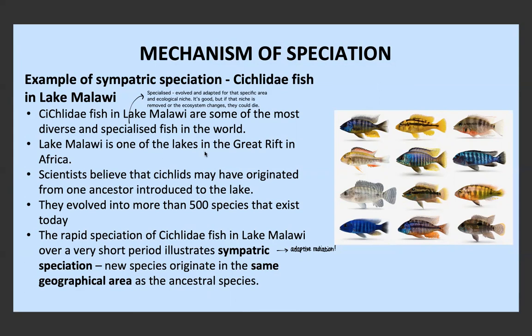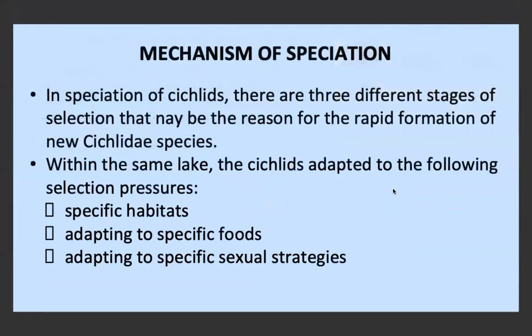Lake Malawi is one of the lakes in the Great Rift Valley in Africa, and scientists believe that cichlids had one common ancestor that was introduced to the lake — just one species of fish originally introduced to Lake Malawi. It then evolved into more than 500 different species which are now reproductively isolated from each other. This happened rapidly — not rapid as in one or two generations, but rapid in comparison to how fast evolution usually occurs. This rapid speciation of cichlid fish in Lake Malawi illustrates sympatric speciation because these new species originated in the same geographical area as the ancestral species with no geographic isolation.